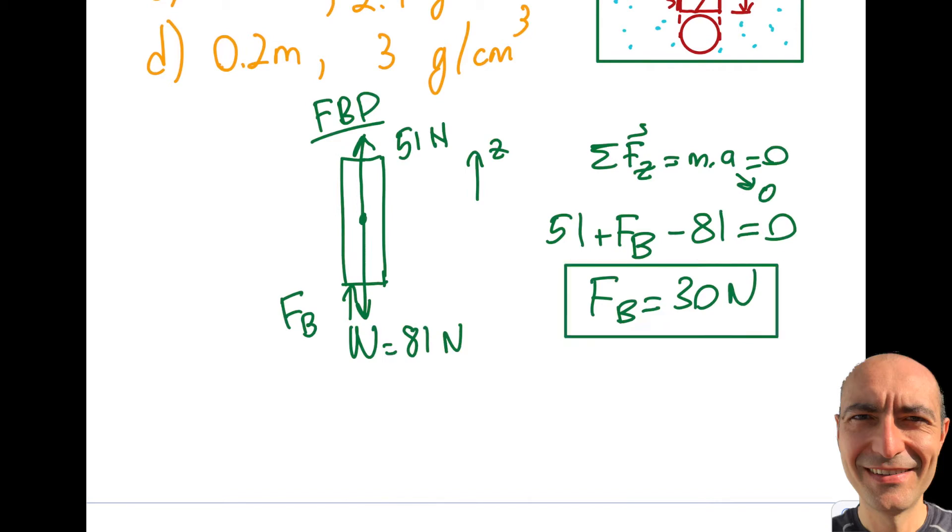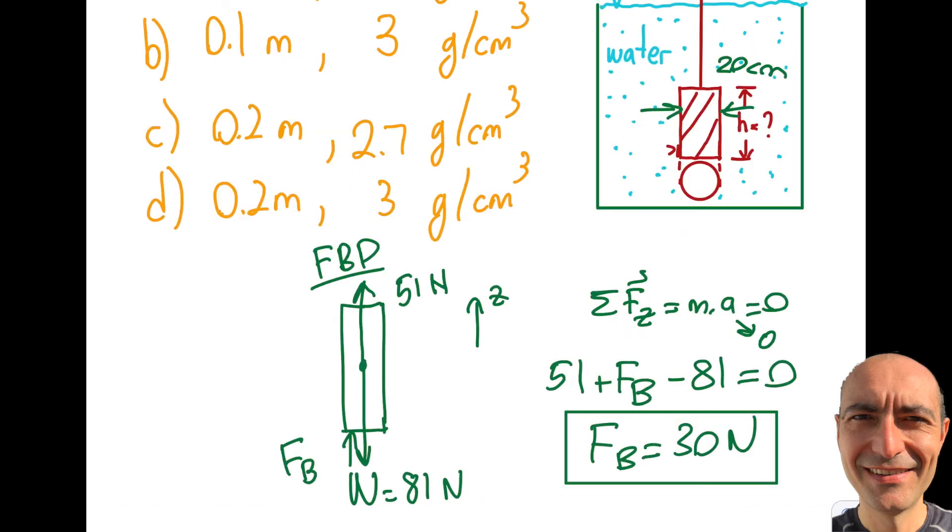FB is equal to 30 newtons. Okay, the next thing is the reference manual explains this in a definition sense. They don't give any question. So you may want to listen to me over here. The buoyant force is equal to the weight of the displaced fluid. So in this particular case, what is the displaced fluid when this is put inside?